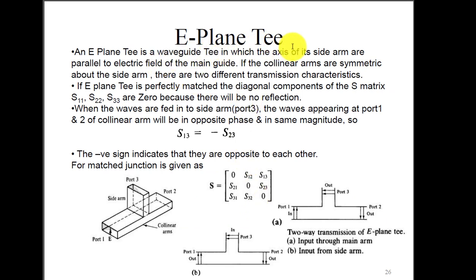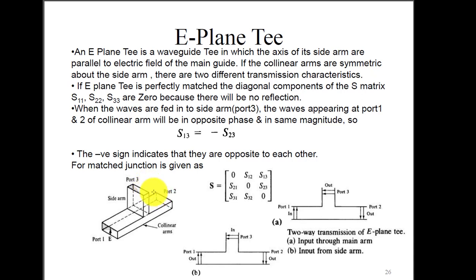The E-plane T-junction is constructed by interconnecting three rectangular waveguide sections. Starting with one rectangular waveguide, the two open ports are considered port 1 and port 2. A cut is made along the wider dimension and an auxiliary port, or side arm, is attached as port 3. It is called an E-plane T-junction because the shape resembles the letter T, and the axis of the side arm is parallel to the electric field of the main waveguide. This junction divides the electric field equally between port 1 and port 2 with a 180-degree phase shift.